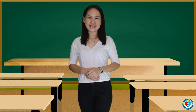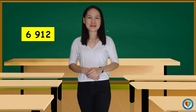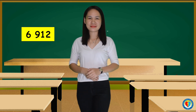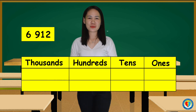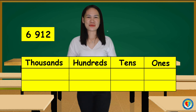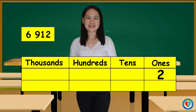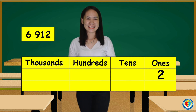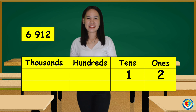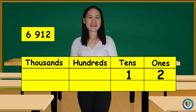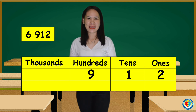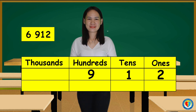Now, let us do an activity. The number is 6,912. What is the place value of 2? Very good, it's in the ones place. How about number 1? Yes, it's in the tens place. What is the place value of 9? Yes, it's in the hundreds place. And last, the fourth digit — very good, it's in the thousands place.